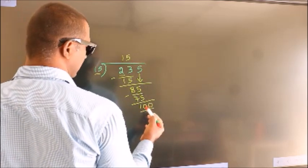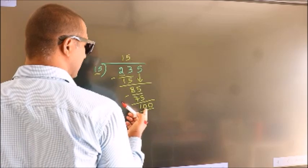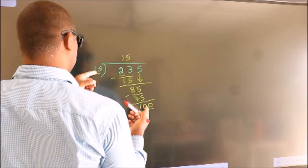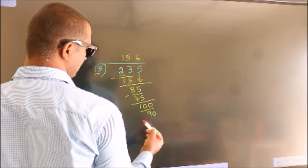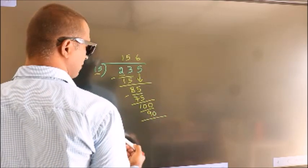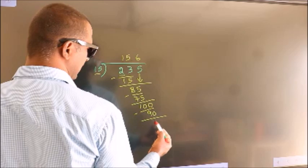So 100. A number close to 100 in 15 table is 15, 6, 90. Now we subtract. We get 10.